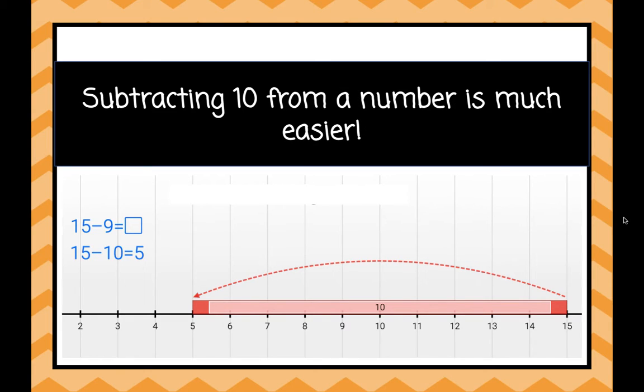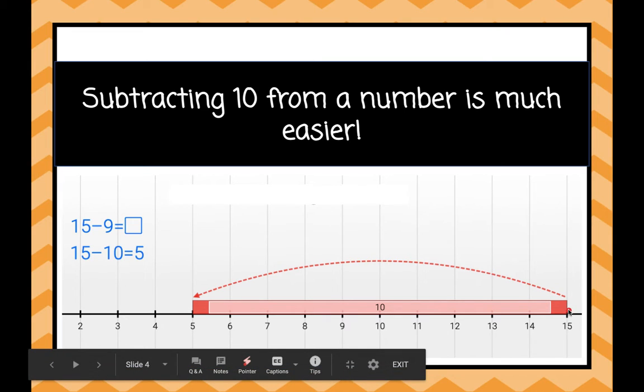So here we can see it on a number line. Here we are at 15. We're going to take away 10 instead. 15 minus 10 is easy. It's 5.